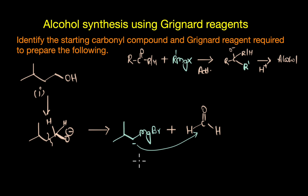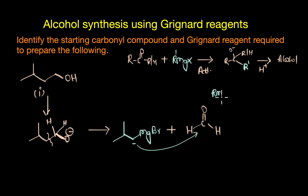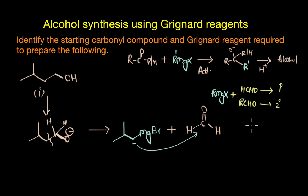The important thing to note here is that only addition to formaldehyde will give us a primary alcohol. Addition of a Grignard reagent to any other aldehyde gives a secondary alcohol, as seen in the previous example. With ketones, we get a tertiary alcohol. So to summarize: Grignard reagent + formaldehyde → primary alcohol; + any other aldehyde → secondary alcohol; + ketone → tertiary alcohol.